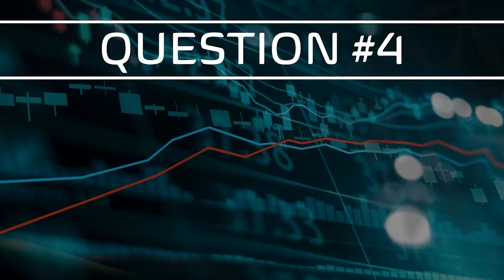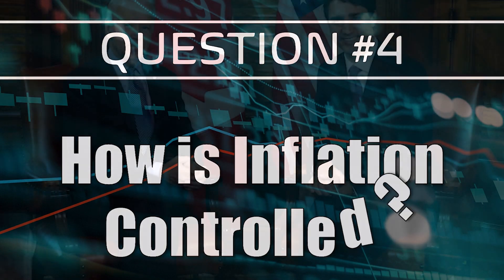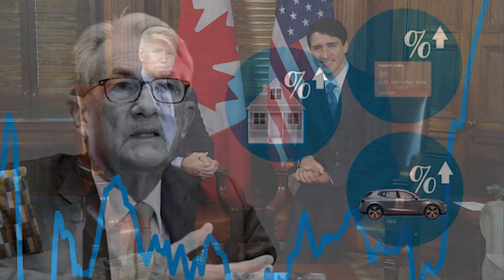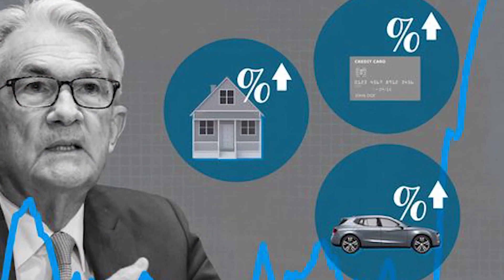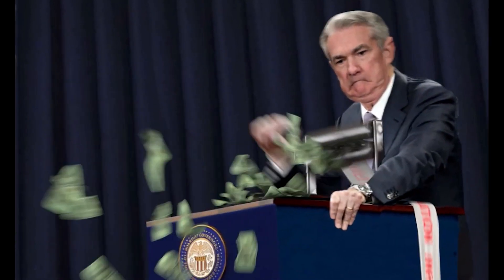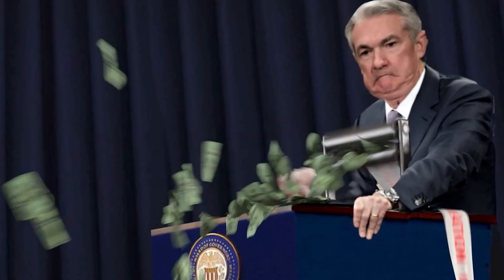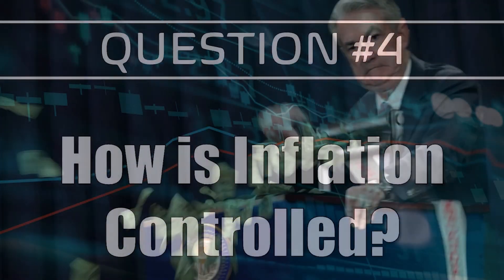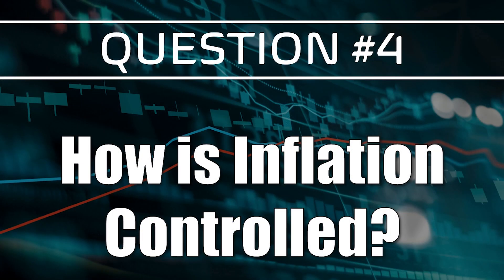Another question on everybody's mind is: how is inflation controlled? Well, governments and central banks can control inflation by using a variety of tools. For example, they might raise interest rates, which makes borrowing money more expensive and helps slow down the economy. They can also change the amount of money that they print, which can help keep prices stable. If you want to see a video we've made on controlling inflation, we'll leave a link in the description — feel free to check it out for more details.